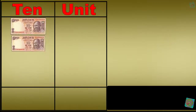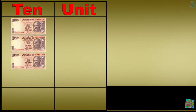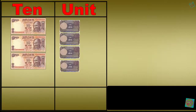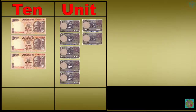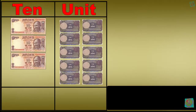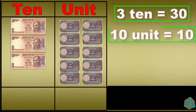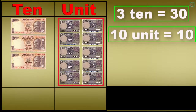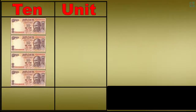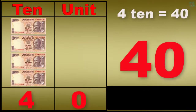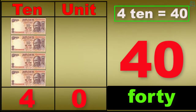1 ten, 2 tens, 3 tens, 3 tens 1 unit, 3 tens 2 units, 3 tens 3 units, 3 tens 4 units, 3 tens 5 units, 3 tens 6 units, 3 tens 7 units, 3 tens 8 units, 3 tens 9 units, 3 tens 10 units. 3 tens is equal to 30, 10 units is equal to 10. With the help of these 10 units, we got another 1 ten, now we have 4 tens, 0 units. F-O-R-T-Y, 40.